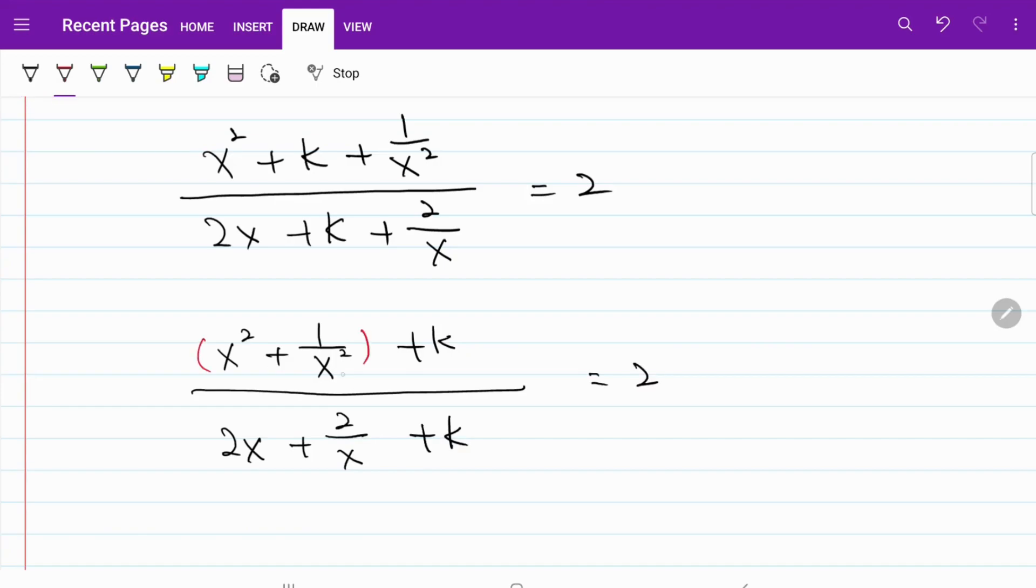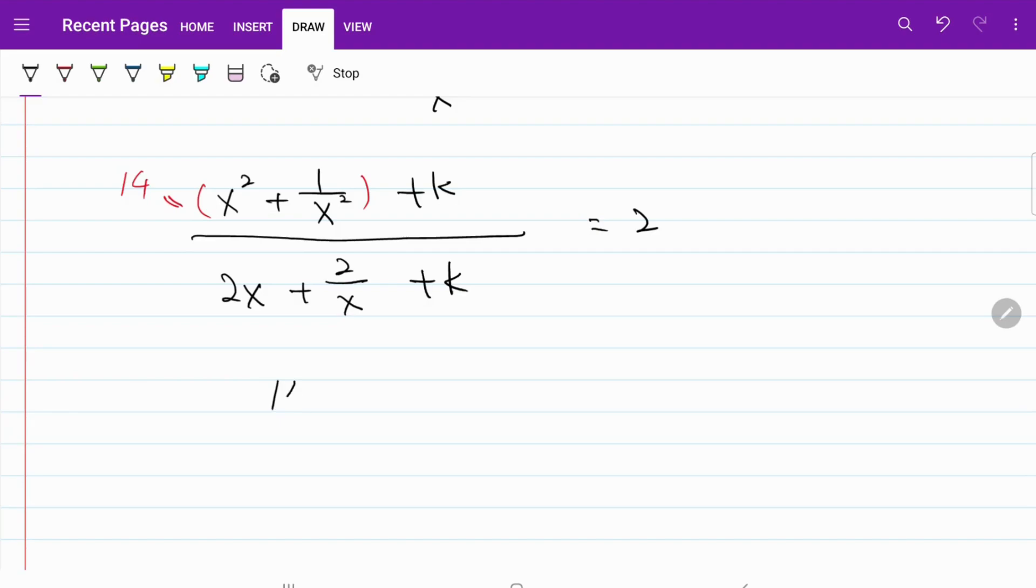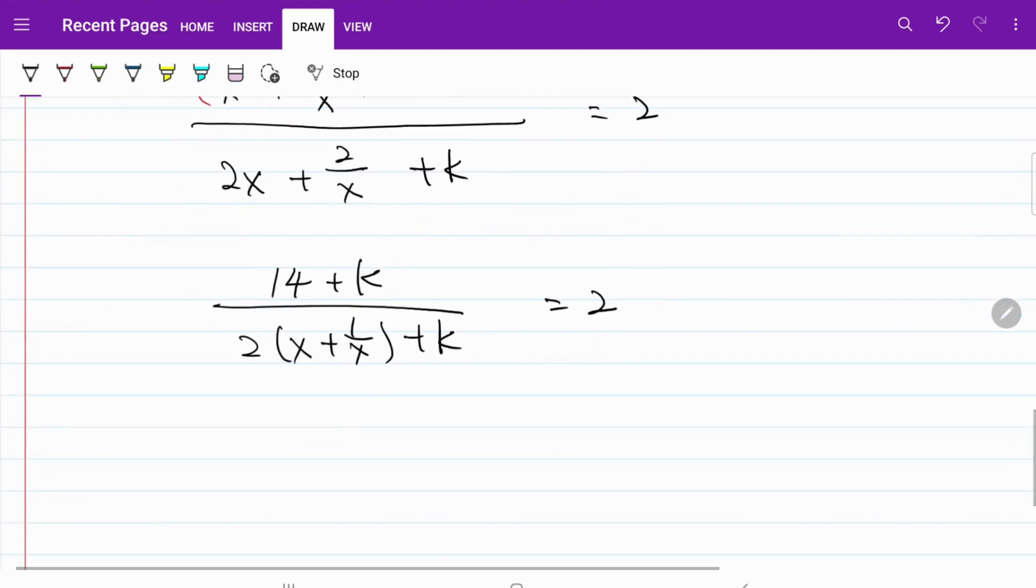I know that based on equation 2, this is equal to 14. So let's put in the value of 14. Now I have 14 plus k over 2x plus 1 over x plus k equal to 2. And based on equation 1, we know that x plus 1 over x equals negative 4.